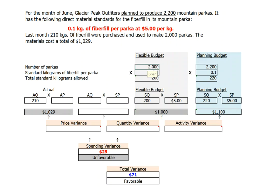Our activity variance, on the other hand, is $100, and it's favorable. Why is it favorable? Because originally we expected to spend $1,100 on fiberfill, but because we produced 200 fewer parkas, our revised or expected cost of producing 2,000 parkas is less, and anything that reduces our cost or increases our bottom-line net income is considered a favorable variance.